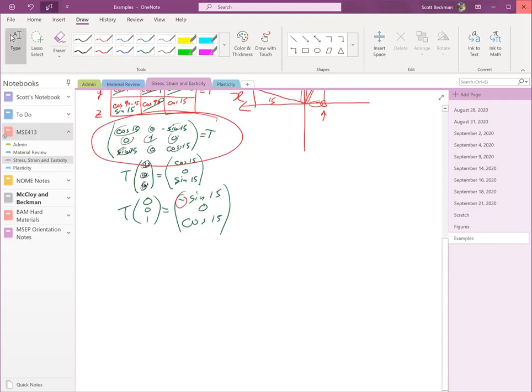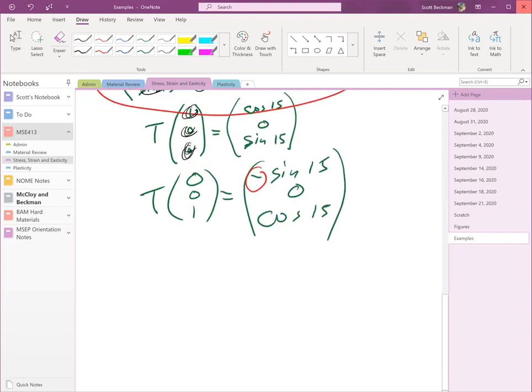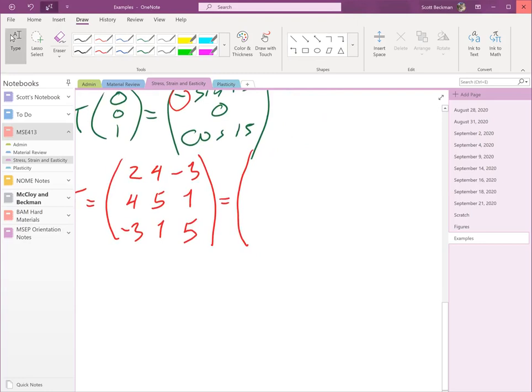Okay, so how do we apply this? Well, we have our stress tensor, and I'm just going to give one example here. 2, 4, negative 3, 4, 5, 1, negative 3, 1, 5. And those correspond to the elements sigma 1, 1, sigma 1, 2, sigma 1, 3, sigma 2, 1, sigma 2, 2, sigma 2, 3, sigma 3, 1, sigma 3, 2, sigma 3, 3.